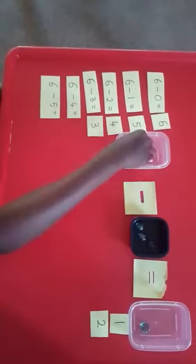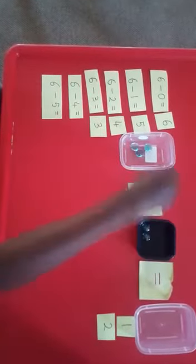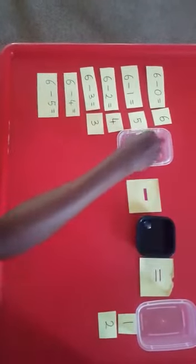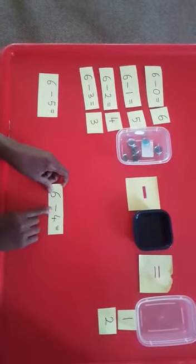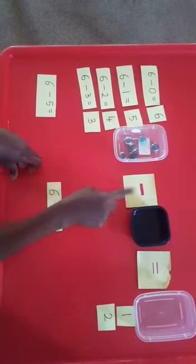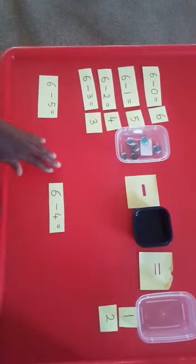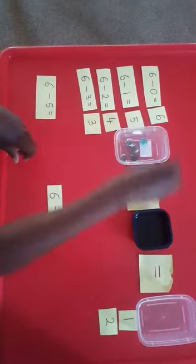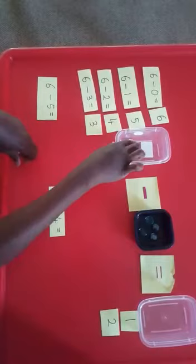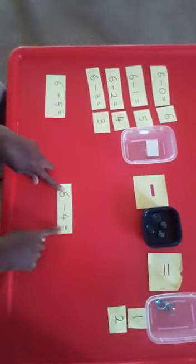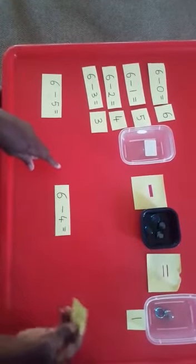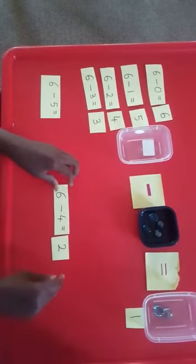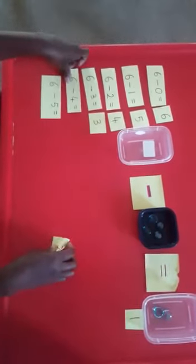Remember to always take back the stones: one, two, three, four, five, six. The next equation says six take away four. I take away four — one, two, three, four. How many are left? One, two — six take away four equals two. I find the answer card two and place it next to the equation.